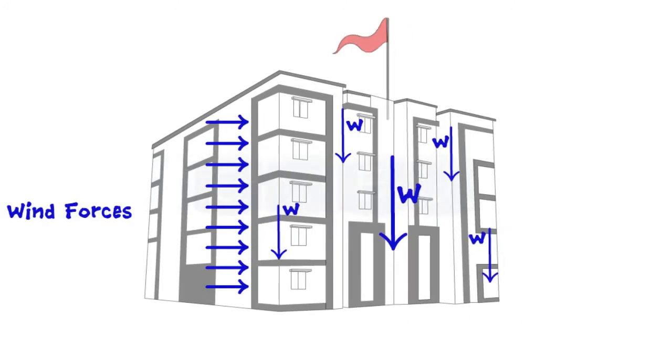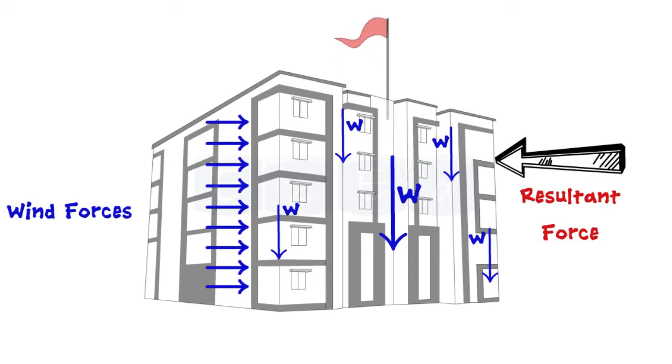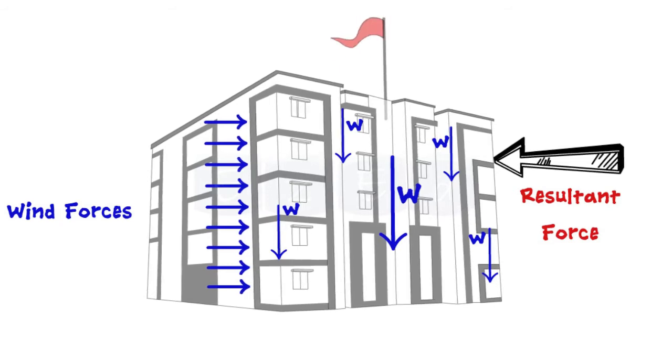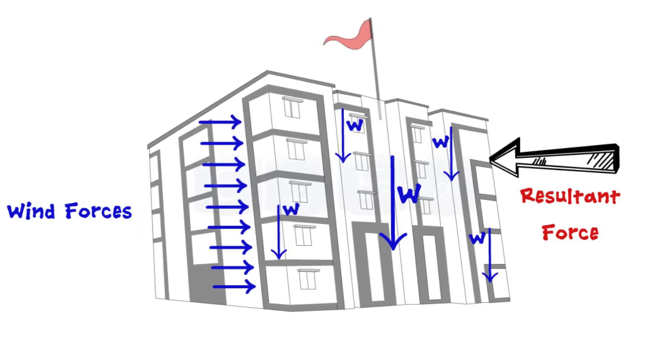Because of all these forces, a resultant will definitely act on the building. Therefore, by Newton's second law of motion, the whole building must move in the direction of the resultant.